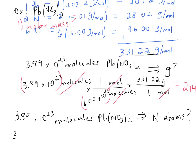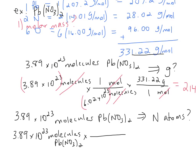You'll start again with the only number you have: 3.89 times 10 to the 23rd molecules of Pb(NO3)2. You don't want molecules, so write that on the bottom. The key is to think about our formula for the compound Pb(NO3)2. In Pb(NO3)2 we have 2 nitrogens — remember we distribute that 2 — we have 6 oxygens, and we have 1 Pb. So in 1 molecule, we have 2 nitrogen atoms.